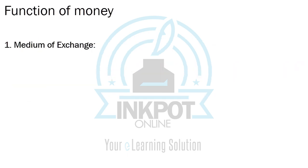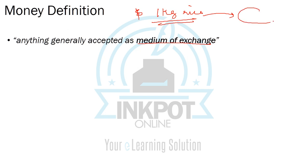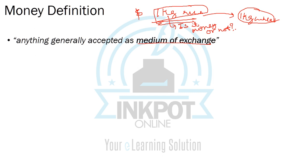So what basically is money? Money is anything that is generally accepted as a medium of exchange. What does that mean? It means that if I have 1 kg of rice and I give it to someone, and in exchange I can take 1 kg of wheat from them — is that 1 kg of rice money or not? We'll come back to this question.